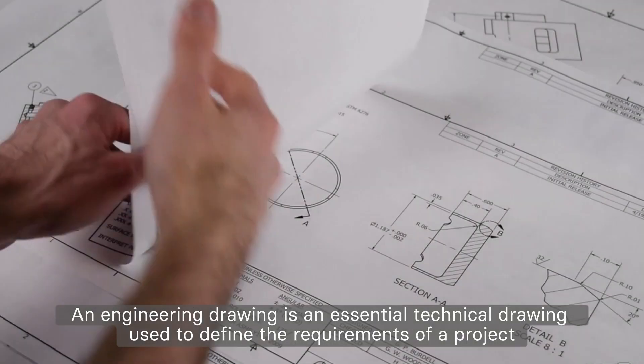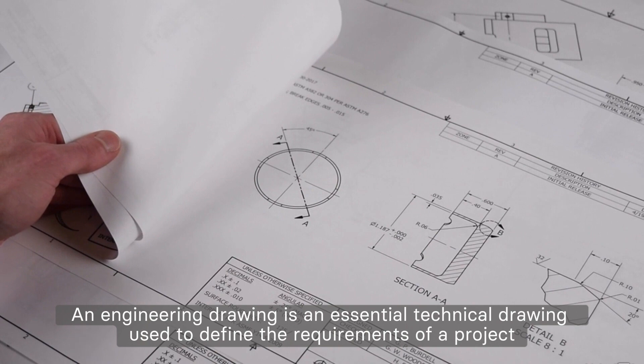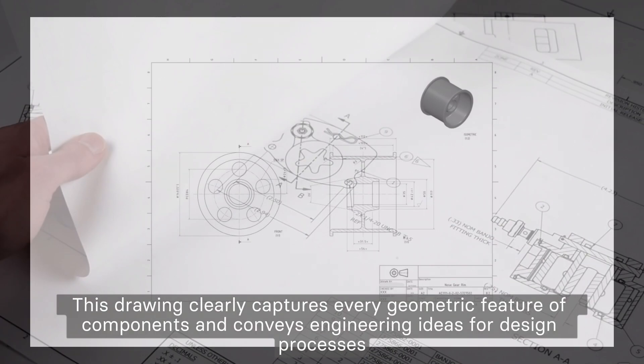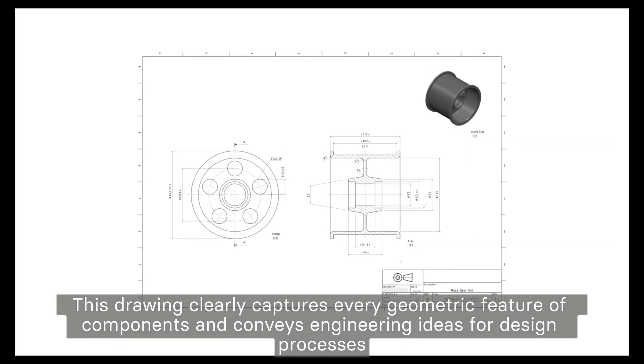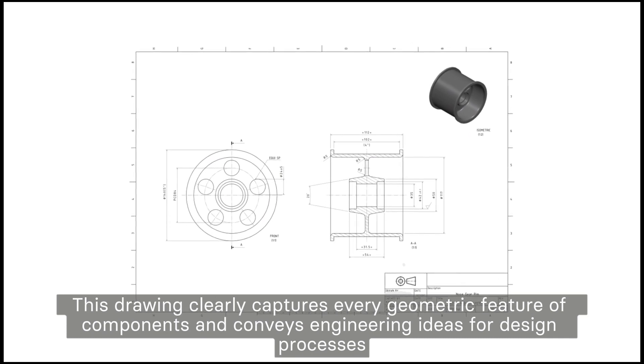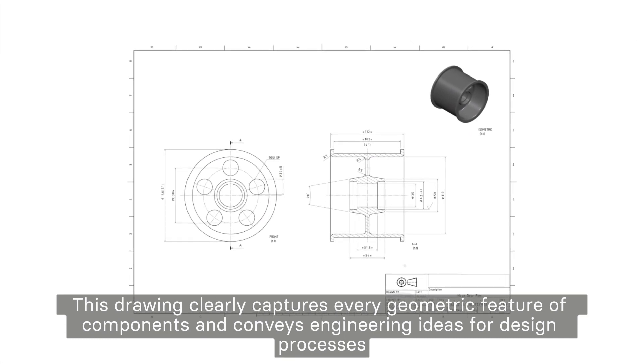What is engineering drawing? An engineering drawing is an essential technical drawing used to define the requirements of a project. This drawing clearly captures every geometric feature of components and conveys engineering ideas for design processes.